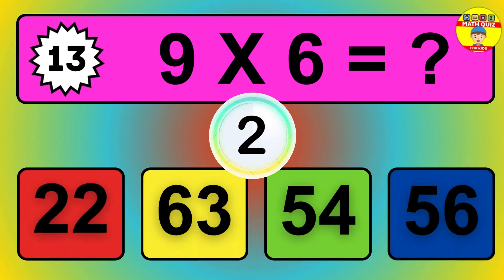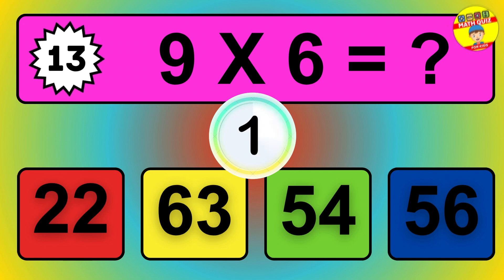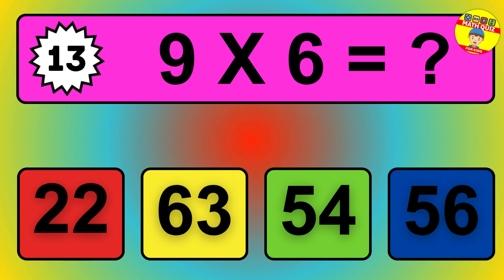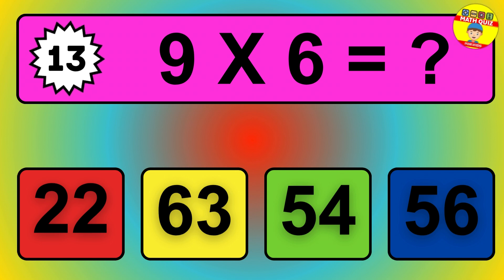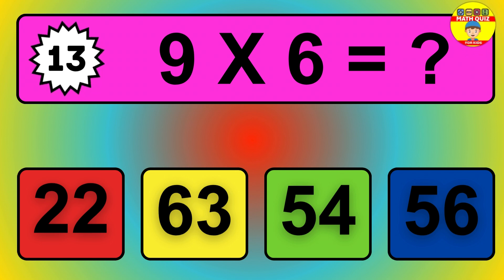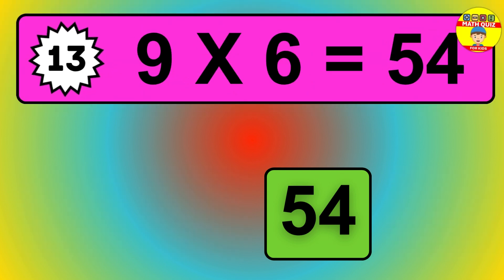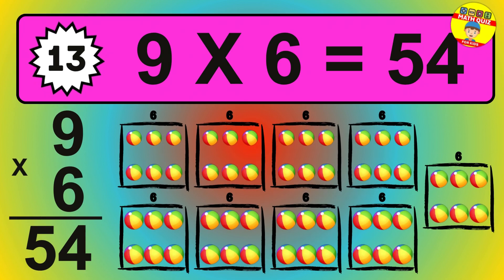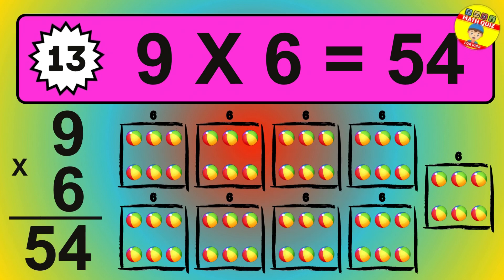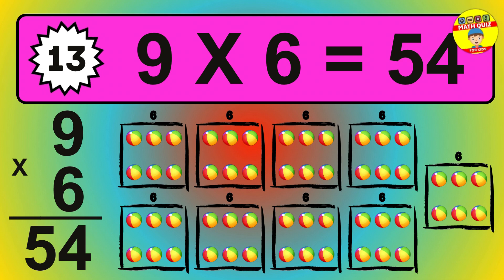Question 15. 8 times 7 equals what? The answer is 8 times 7 is 56. To calculate, we have 8 groups with 7 balls each one. So, how many balls do we have? 56 balls.